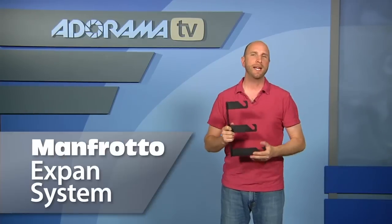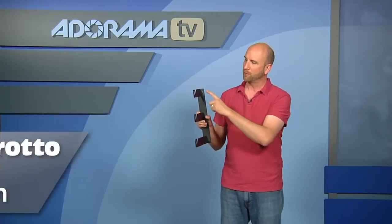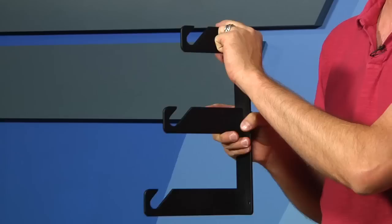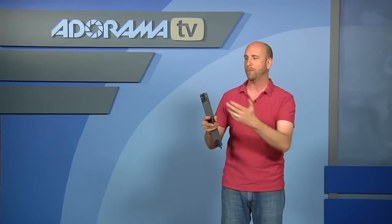Well, that's the Manfrotto X-Pan system. Now what we showed you today had an X-Pan holder with three hooks. And you can get these with different hooks. So you can get one with just a single hook. You can get one with three, like we showed you today. You can get one with four, six, or even 10 hooks. So depending on what kind of studio you're in and how many backgrounds you have, you have a lot of options.